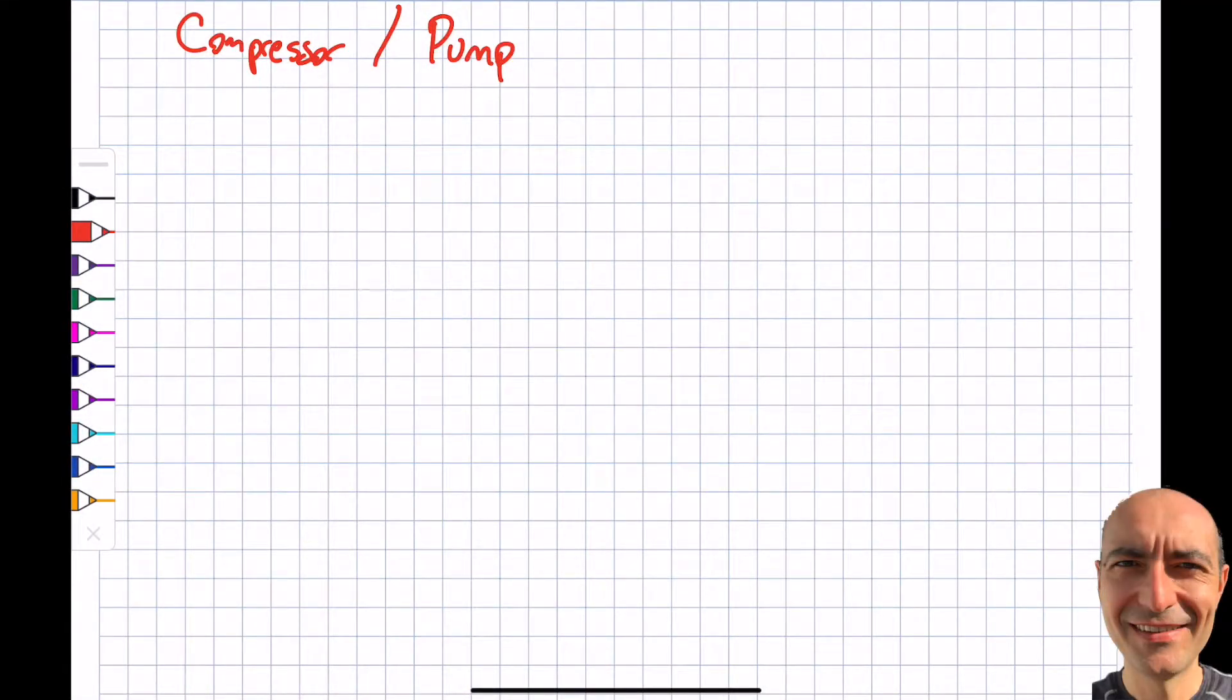Now I'm going to talk about the compressor and pumps, and you may be thinking, why is he covering these two things together? They look completely different. The compressor is for gases because liquids are typically incompressible. I cannot compress them. And the pump is for liquids. They operate on a similar principle in a sense that the ultimate goal of a compressor and pump is to increase the pressure.